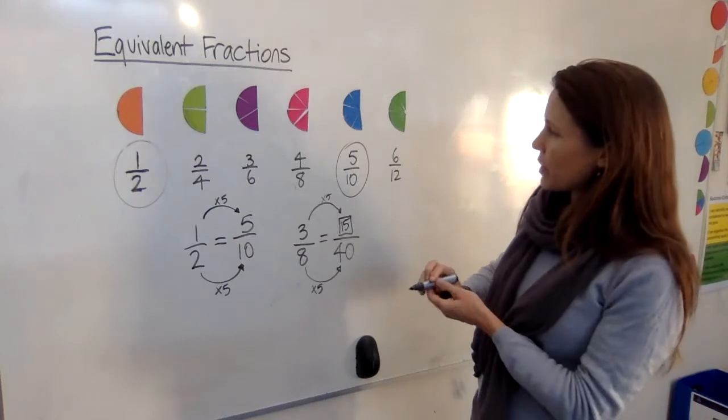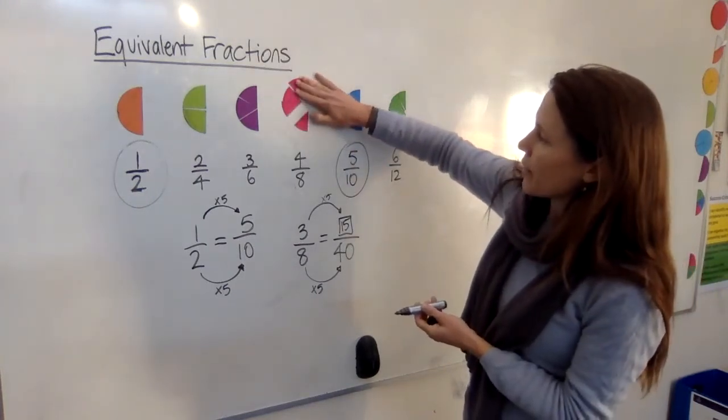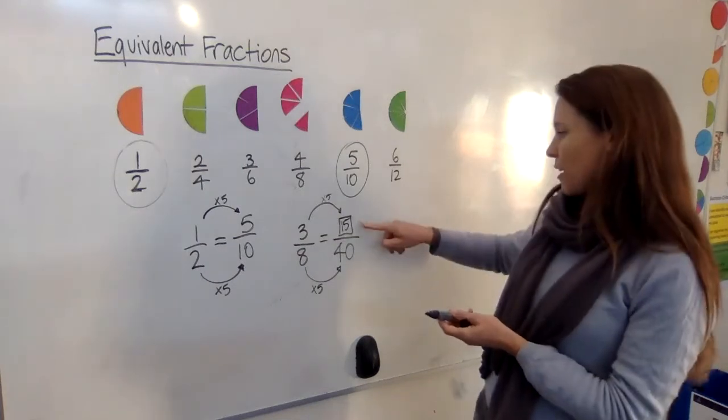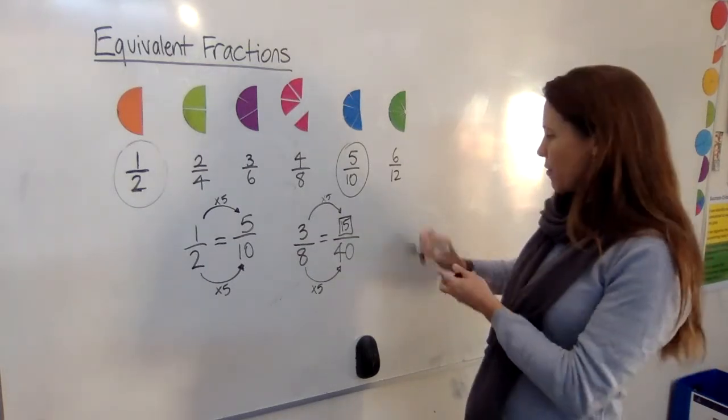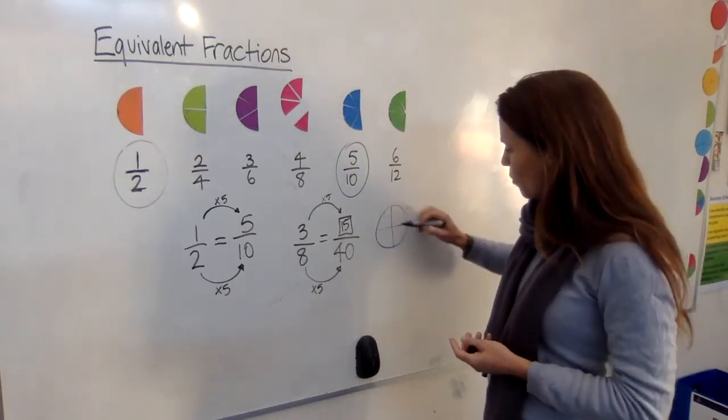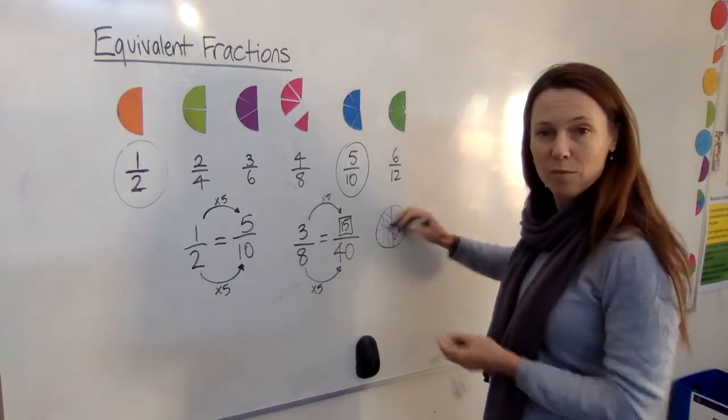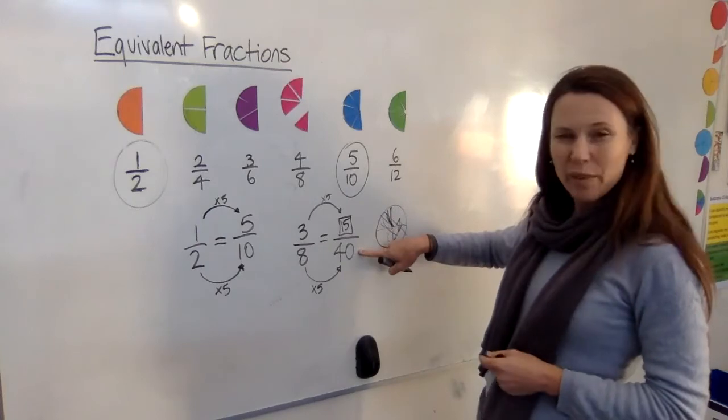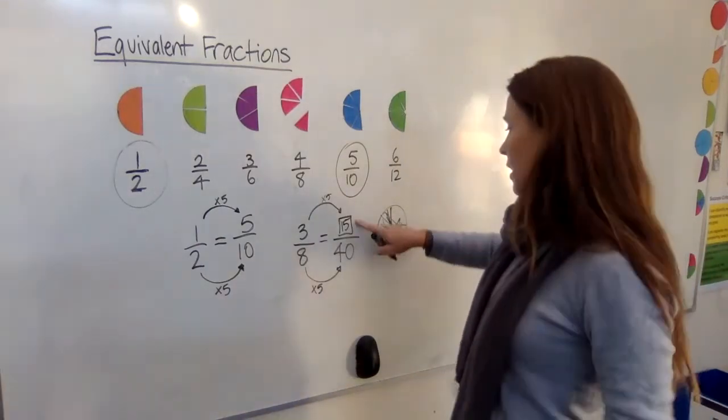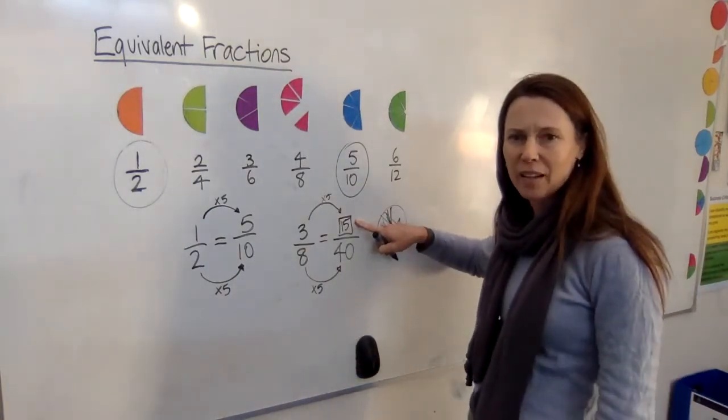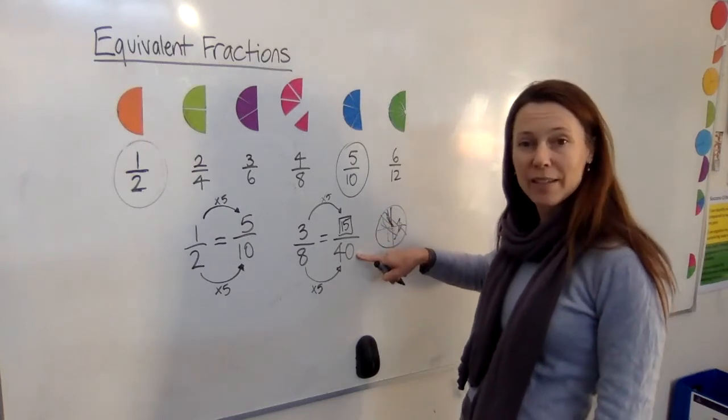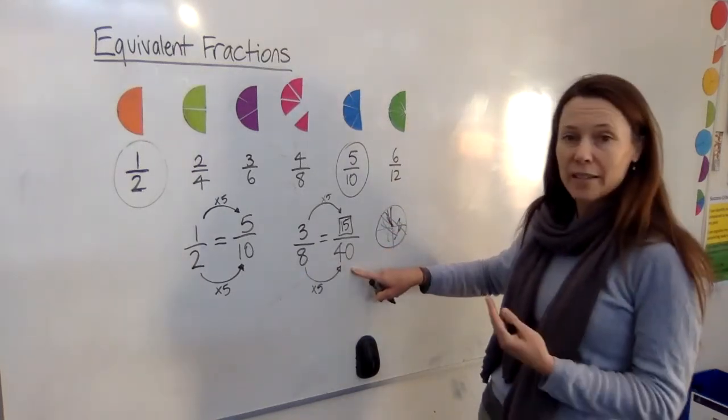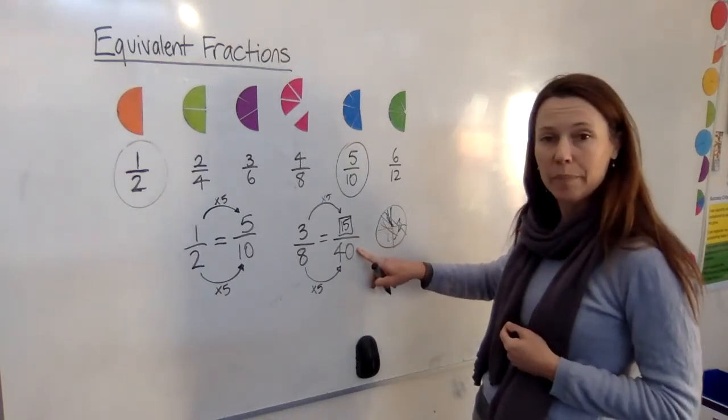Imagine getting three eighths of pizza. These are eighths. It would look like that, wouldn't it? One, two, three quite big slices. Whereas someone who's getting 15 fortieths, well, they've got a pizza that's divided up into 40 pieces. That's a lot of pieces. It's tiny little slivers, right? Each one would only be so small. But to make up the fact that the pieces are so small, they're getting 15 of them. So they think they're getting a lot of slices, but they're really a lot of tiny slivers. Have the two people got the same amount of pizza? Yes. This one's just more cut up.